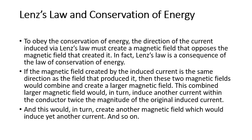Why does Lenz's law occur? It is to obey the conservation of energy. The direction of current via Lenz's law must create a magnetic field, and this magnetic field opposes the magnetic field that created it initially. In fact, Lenz's law is a consequence of the law of conservation of energy. Energy is always conserved — it cannot be destroyed, cannot be created. If you are increasing the energy, then some must be decreased so that the total is constant. The sum of energy in the system should be constant.